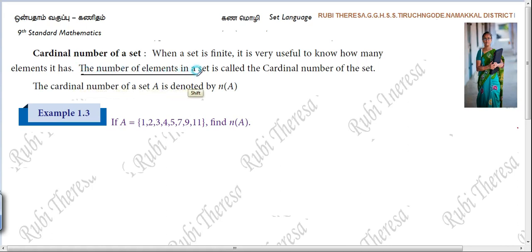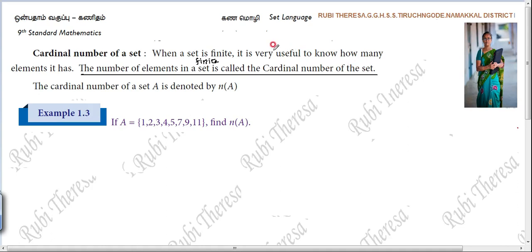The number of elements in a finite set is called the cardinal number of the set. Because in an infinite set you won't be able to count the elements — it will go on. So it is understood that even though you write 'set' without 'finite,' it is understood that it is a finite set. The number of elements in a set — it is understood that it is a finite set.